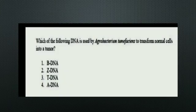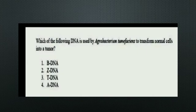The next question: Which DNA is used by Agrobacterium tumefaciens to transform normal cells into a tumor? The options are B-DNA, Z-DNA, T-DNA, and A-DNA. The right answer is Option 3, T-DNA.